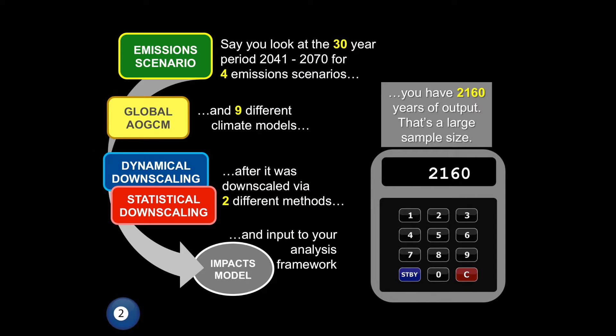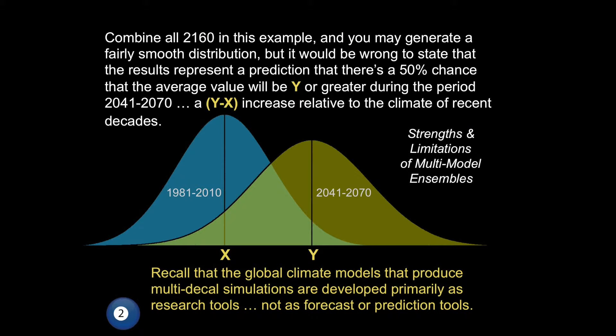You could do a study with four different emission scenarios from CMIP5 across 30 different years — giving 120 data points — and pick nine climate models that do reasonably well for your area, getting up to 1,000 points. Look at two different downscaling methods and you have more than 2,000 points. You put them all together and look at the distribution in the historical period and in the future. That's all fine. But you shouldn't then say you have a prediction that there's a 50% chance the average value will be that or greater in the future. It's not a prediction.